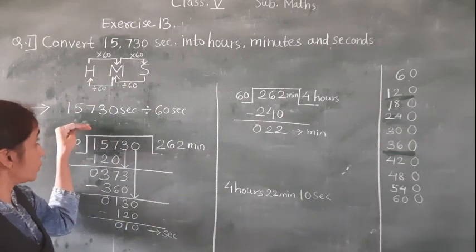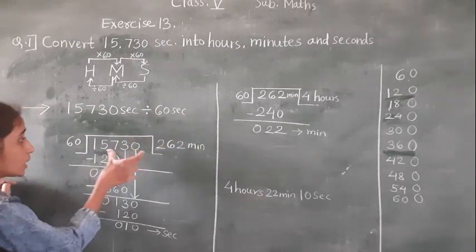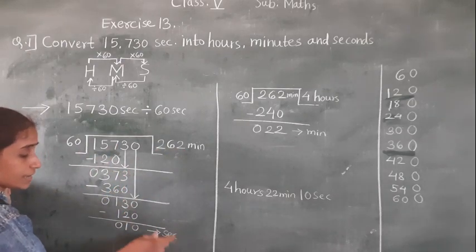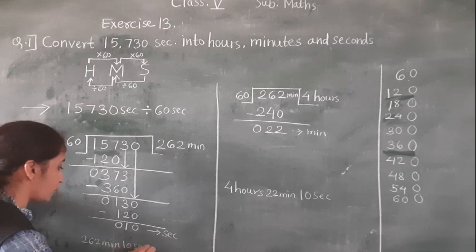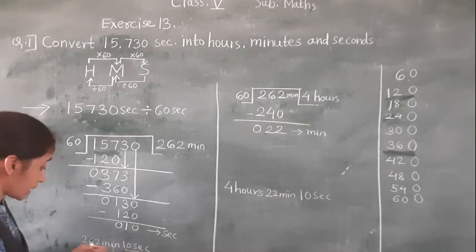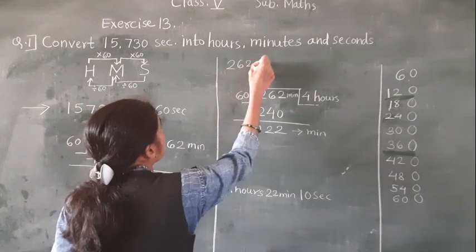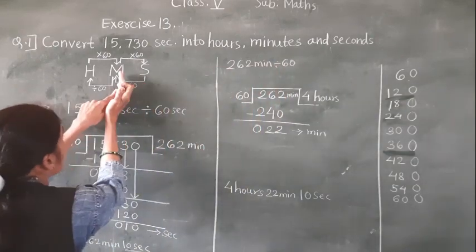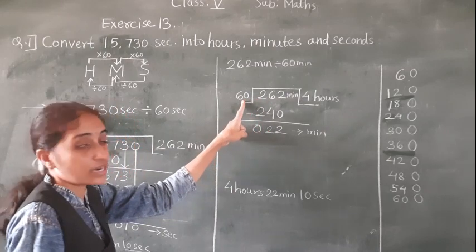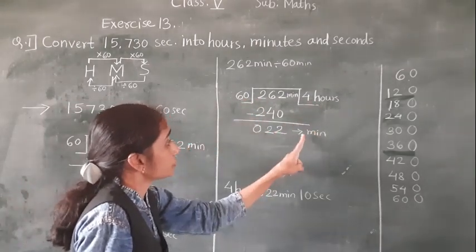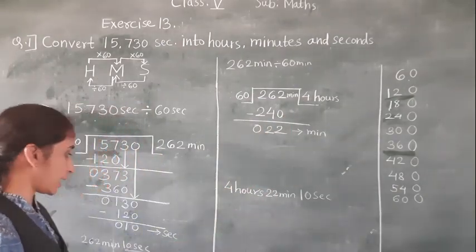How to convert: 15,730 seconds — we divided by 60 seconds and got 262 minutes and 10 seconds. Then for 262 minutes we divided by 60 minutes and got 4 hours and 22 minutes. So the answer is 4 hours, 22 minutes and 10 seconds.